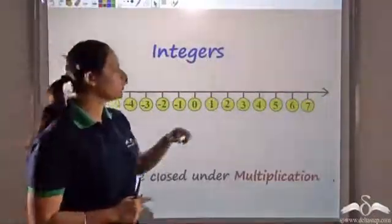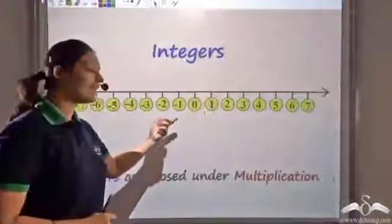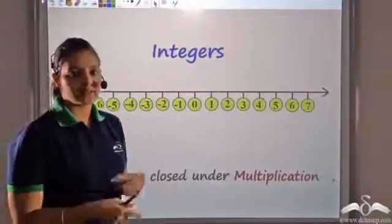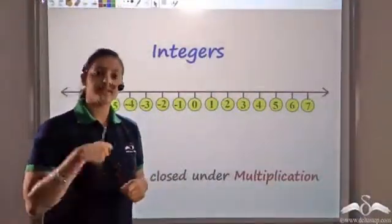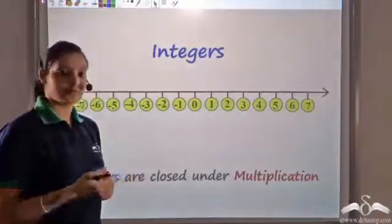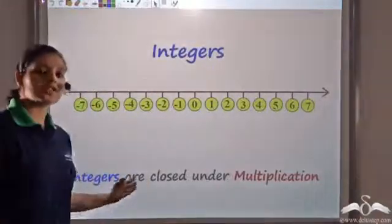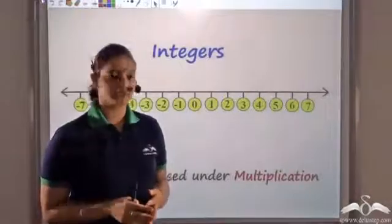We also know that if I take any two integers and multiply those integers, the result is also an integer. Hence, I can say that integers are closed under multiplication.